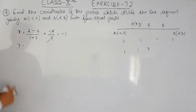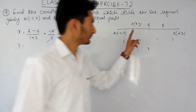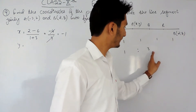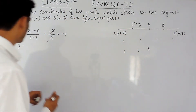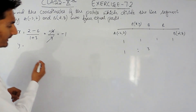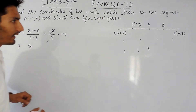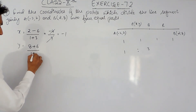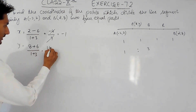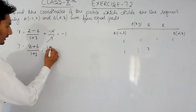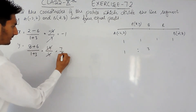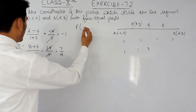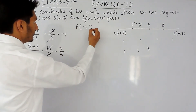Now I have to find the y coordinate. Again using the section formula, I multiply 1 with y₂ (which is 8) to get 8, and 3 multiplied by y₁ (which is 2) gives 6. In the denominator it will be 1 plus 3, giving 14 upon 4, which simplifies to 7 upon 2. So the coordinates of P are (minus 1, 7/2).